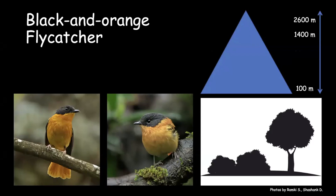The black-and-orange flycatcher, just like the Nilgiri flycatcher, loves shola forests. But while the Nilgiri flycatcher occupies higher up parts of the trees, the black-and-orange flycatcher loves undergrowth. Found above 1,400 meters all the way to the shola forests of the Western Ghats — exclusively found there — and it's a very pretty-looking bird.